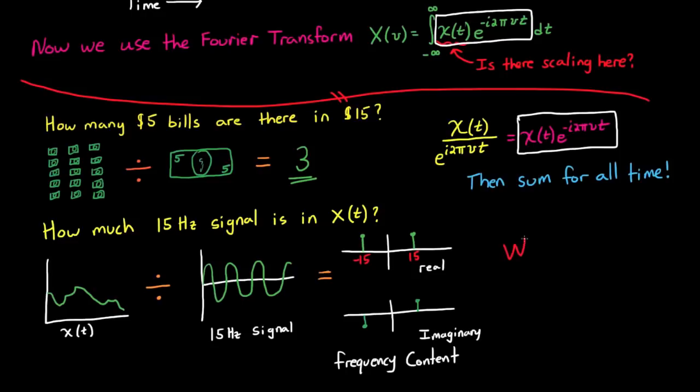This might look like mathematical magic. At least it did to me for a really long time. I mean, how does simply dividing by e to the i t get us any kind of useful frequency domain information? If you work through the problem graphically, it tends to make more sense.